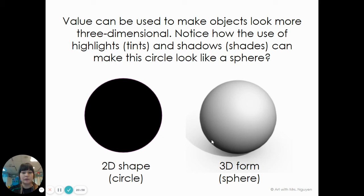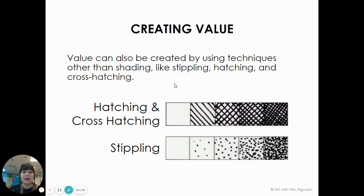You can create value by mixing paints. You can make value by pressing down hard or light with your drawing tool. You could also make value with lines and dots. If you make value with lines, that is called hatching or cross-hatching. If you make value with dots, that is called stippling.